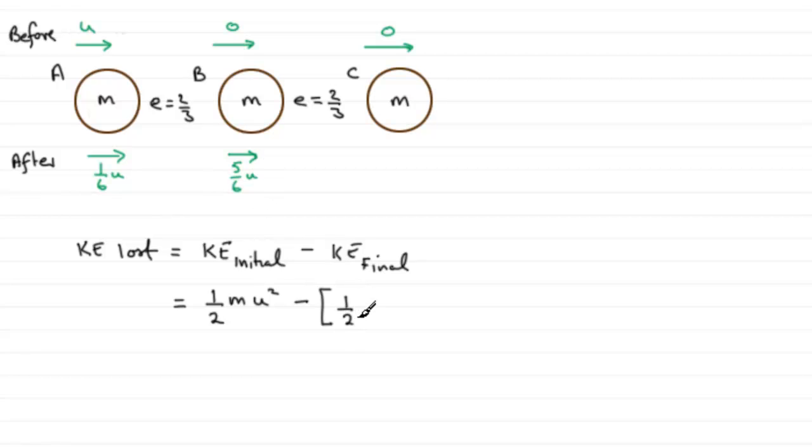So for A, it's going to be ½m times its speed squared, so it's going to be 1/6 U all squared, and then we're going to add that to the kinetic energy of B. So that's going to be ½ the mass m times its speed 5/6 U, and that is squared. Okay, so what we've got here for the first term is ½mU² minus what we have here is essentially going to come to 13/36, so we've got 13/36 mU². So ½mU², that's 18/36 minus 13/36 is going to be 5/36 mU². That's what we had to show.